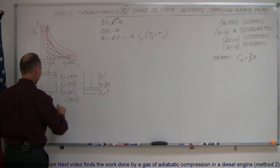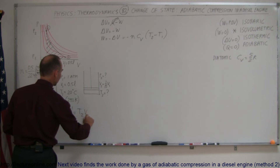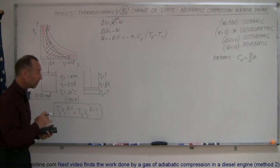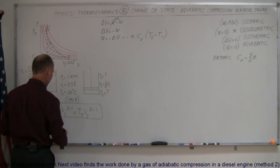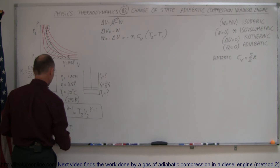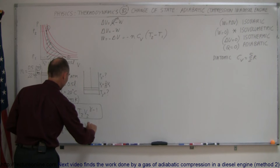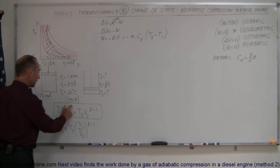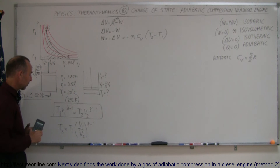To find T2, we use the adiabatic temperature-volume relation from a previous video: T1 times V1 to the power (gamma minus 1) equals T2 times V2 to the power (gamma minus 1). Solving for T2, we get T2 equals T1 times (V1 over V2) to the power (gamma minus 1). Since V1 is larger, we put V1 over V2 in the numerator and multiply by T1.